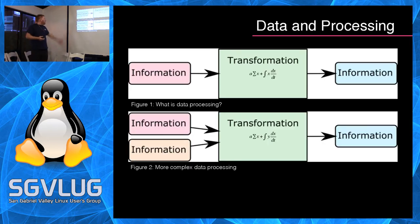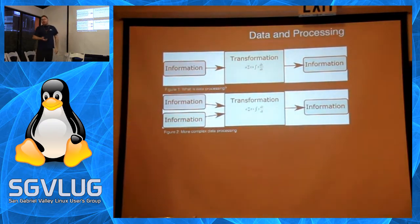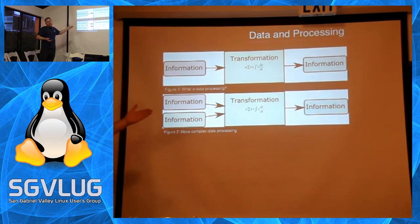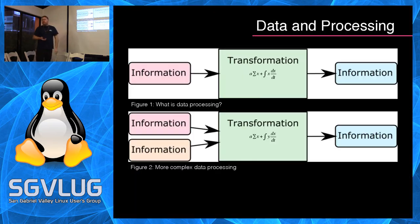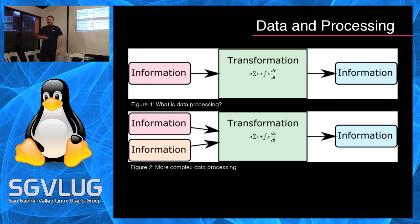The basic idea behind data processing is you have information that you want to run some transformation on, and that yields some other information. As you get more complicated, you start running other bits of information together through a transformation to produce a new set of information. This is what we do in the scientific community at JPL. We have data sets from a satellite, run them through a transformation — generally a nasty inverse differential equation — and get information out. Computer scientists work on neural networking code to make that transformation run efficiently.